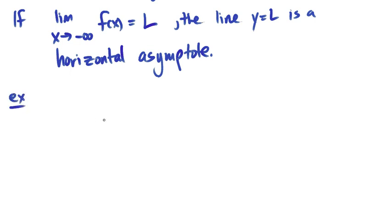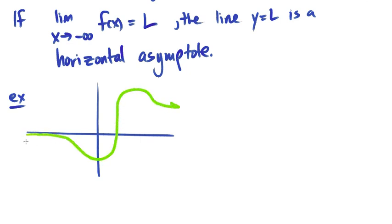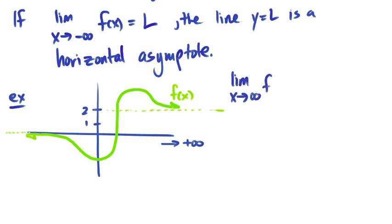For example, if you've got a graph — I'll just do a sketch — where your function goes to positive infinity, and as you approach positive infinity the values get closer and closer to some l value, let's say 2. And in the other direction, your values are getting closer and closer to 0. You would write: the limit as x approaches positive infinity of f(x) equals 2, and the limit as x approaches negative infinity of f(x) equals 0.